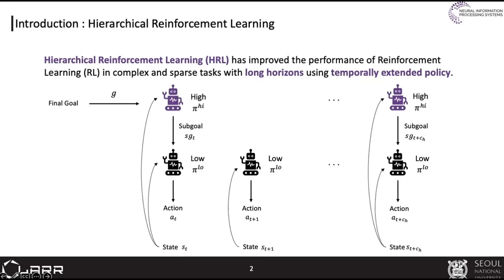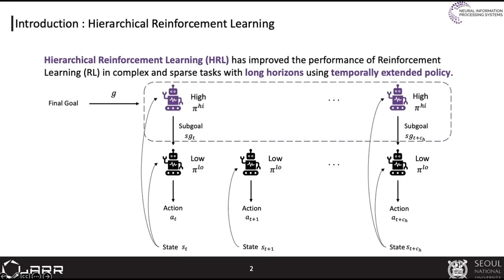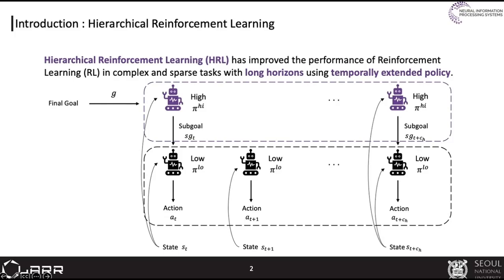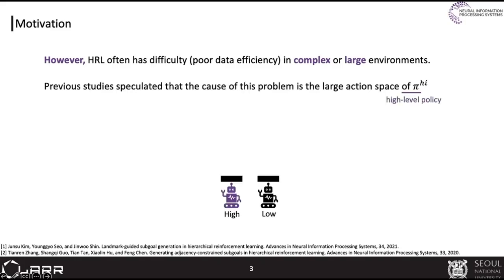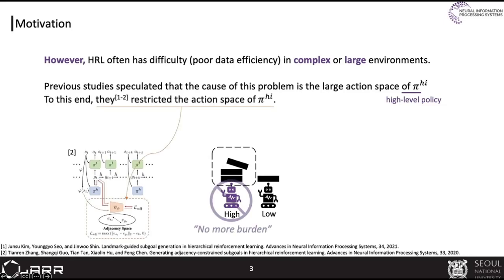The HRL framework typically has a high-level policy which produces a sub-goal and a low-level policy which is instructed to achieve the sub-goal. However, HRL often shows poor data efficiency in complex or large environments. Previous studies speculated that the cause is the large action space, since it imposes a heavy burden on the high-level policy. To this end, they restricted the high-level action space to alleviate this phenomenon.